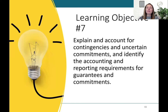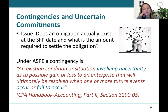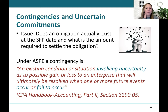Moving on to learning objective seven — contingencies, uncertainties, and commitments. The key question is: does an obligation actually exist at the statement of financial position date, and what is the amount required to settle the obligation? Under ASPE, a contingency is defined as an existing condition or situation involving uncertainty as to a possible gain or loss to an enterprise that will ultimately be resolved when one or more future events occur or fail to occur.